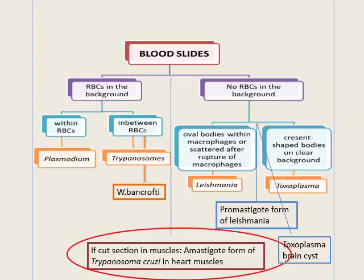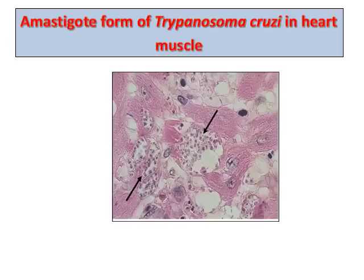The last form: if we have a cut section in muscle tissue, this gives us the amastigote form of Trypanosoma cruzi in heart muscle. In the blood module, this is the only cut section in muscle. The arrows point to the amastigote form of Trypanosoma cruzi in heart muscle.